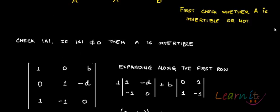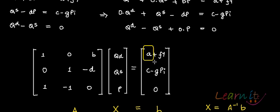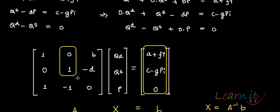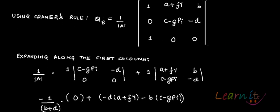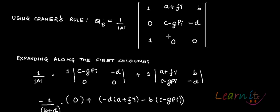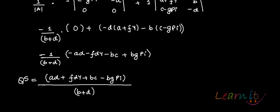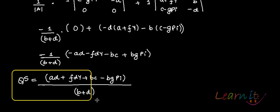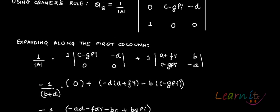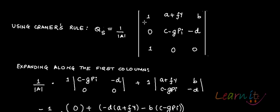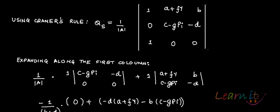For QS, we superimpose the exogenous variable column onto the second column of the coefficient matrix. Computing 1 over determinant A times the resulting determinant — expanding along the first column — the value for QS comes out to be AD plus FY·D plus BC minus BG·PI, all divided by B plus D. This is straightforward determinant calculation.